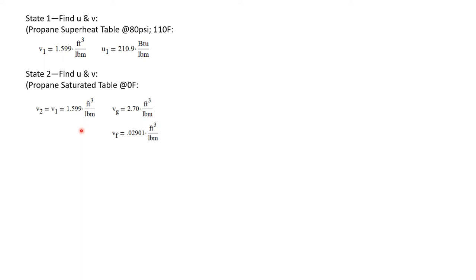And I'm going to use this to determine whether or not the state two is really saturated or whether it's superheated. So from the saturation table, I'm going to get a value for V sub G and V sub F. And I've noted those here. And let's note that V2, which is 1.599, is less than V sub G, which is 2.7. So we see that the specific volume at state two is greater than V sub F, but less than V sub G. And therefore, it is a saturated mixture.